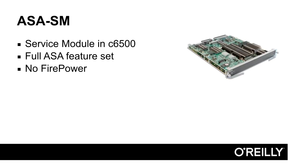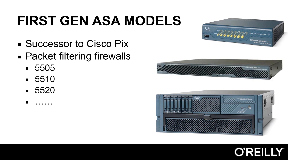Finally, there is the ASA service module — a service card that is inserted into Cisco 6500 switches. It runs the ASA feature set and has no Firepower services. These are all ASA firewalls that run the ASA software taught in this course. Whether you have a service module, a virtual firewall, an X model, or a traditional ASA firewall, you will run exactly the same code and the same commands. Everything taught in this course is applicable across all of these firewalls.